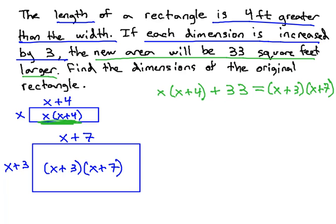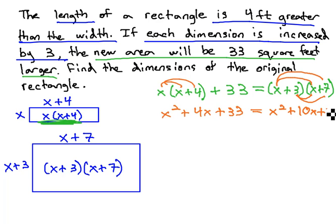We now have an equation we can go about solving. Start by distributing on the left, giving us x squared plus 4x plus 33 equals, on the right side, we have to FOIL: x squared plus 7x and 3x is 10x plus 21.